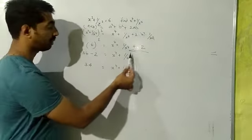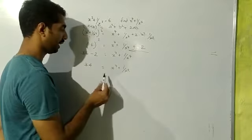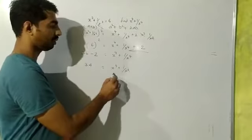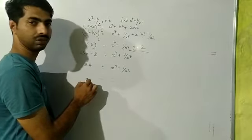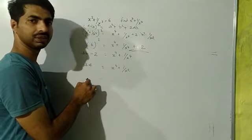What is that? x⁴ + 1/x⁴. So the value of x⁴ + 1/x⁴ is 34. It's a very easy question, isn't it?